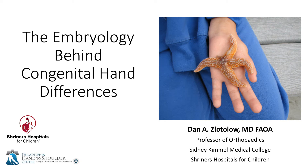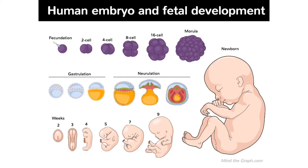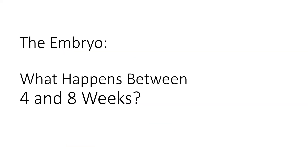My name is Dan Zlatelow. I'm from Philadelphia, and I'm going to be talking to you about the embryology behind congenital hand differences. I'm going to talk about human embryology and fetal development between the fourth and the eighth weeks, when the limb goes from just a bud to a fully formed macrostructure.